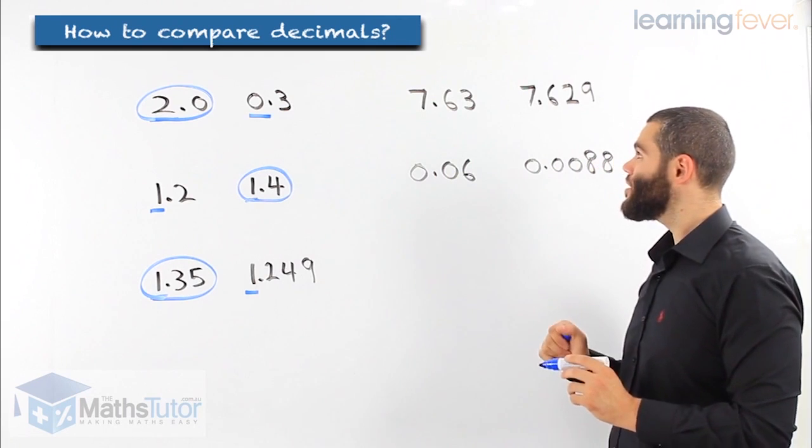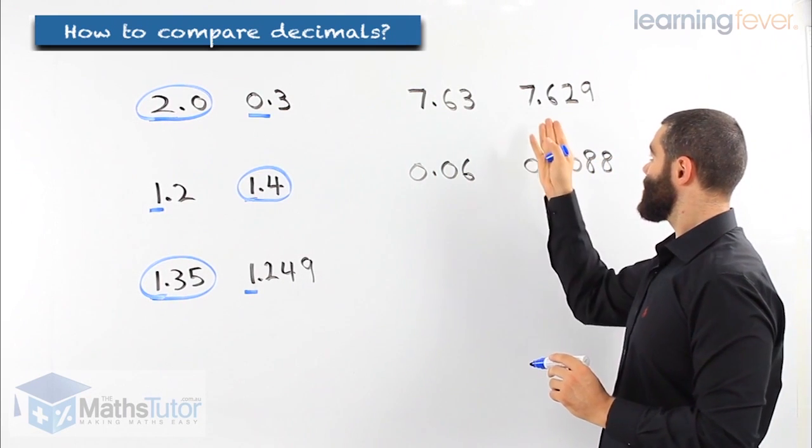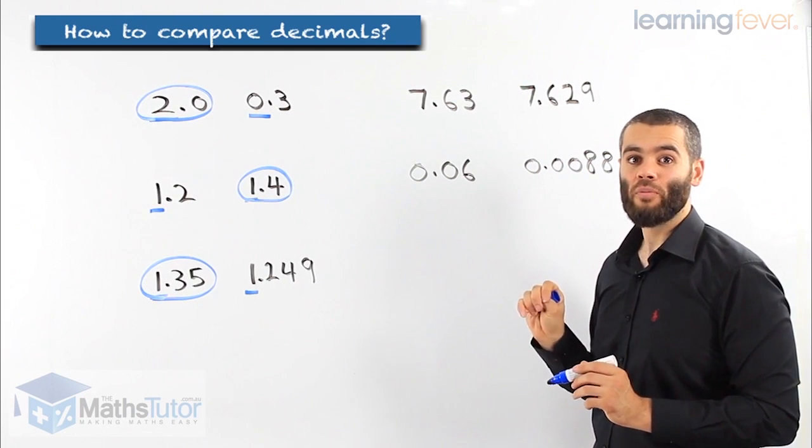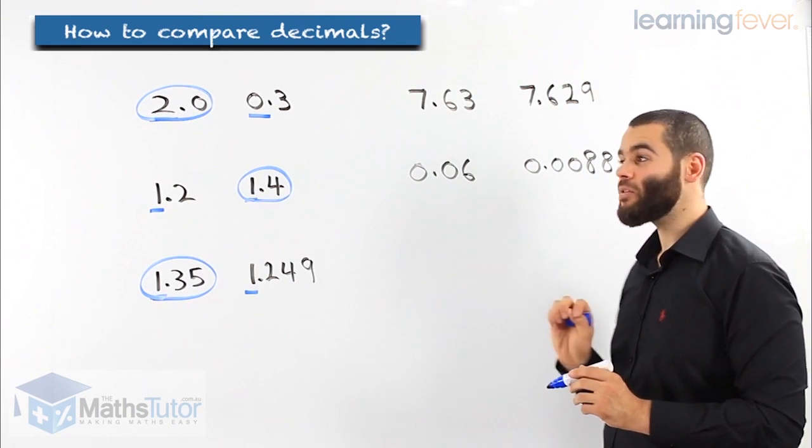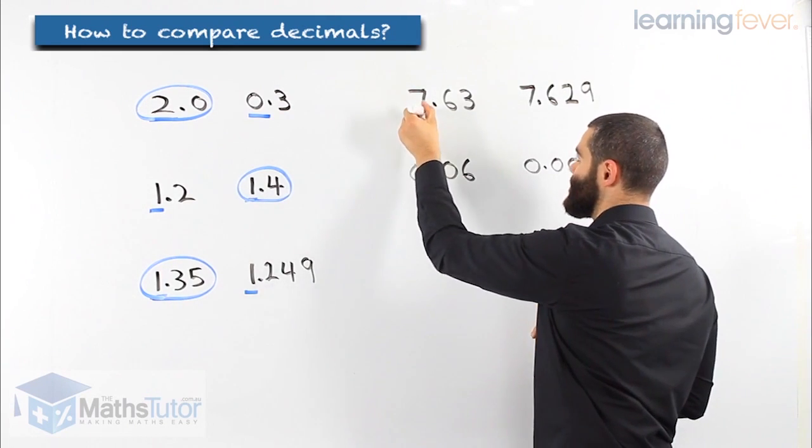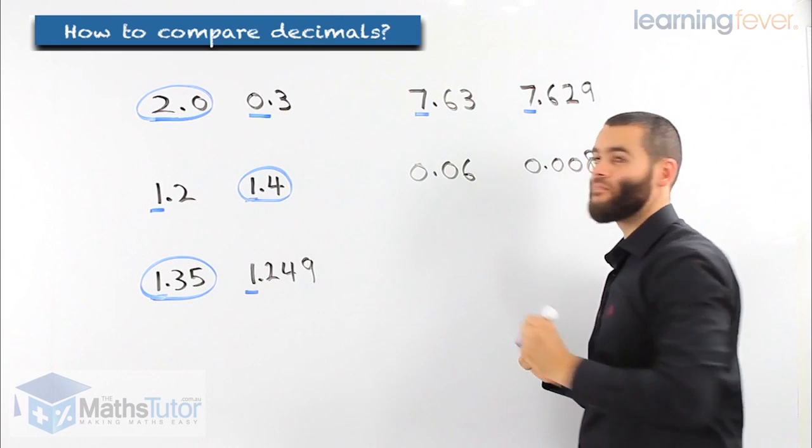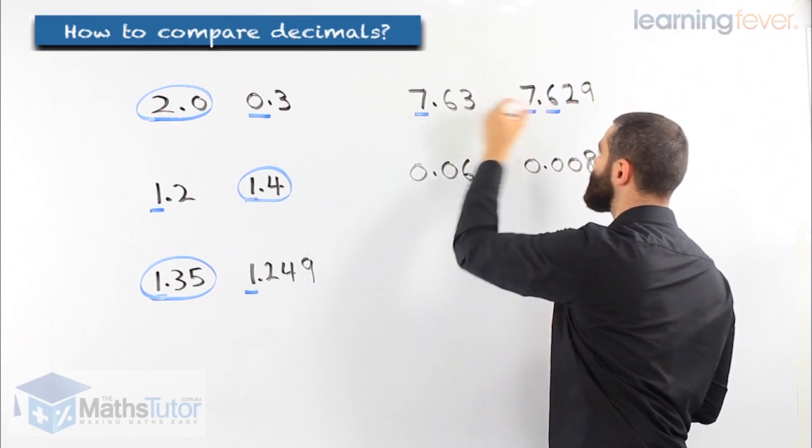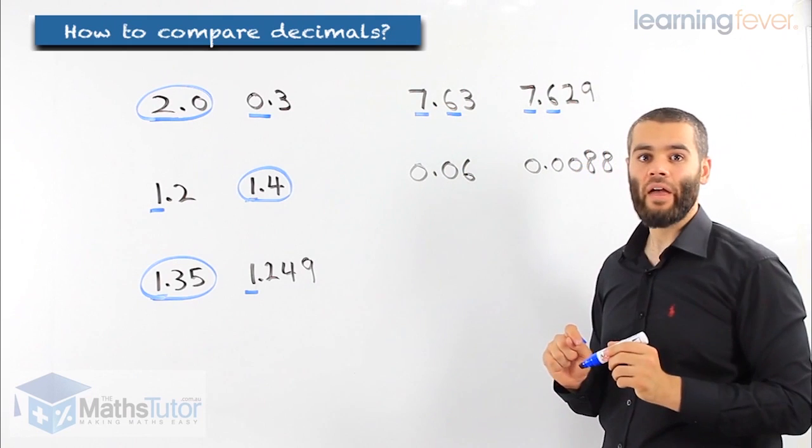Another example. 7.63, 7.629. Let's go through the place values and compare them, and straight away you'll be able to tell which one is larger. 7 and 7. Then we have 6 and 6. So far they are equally value.